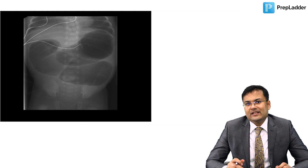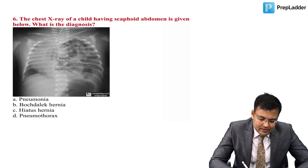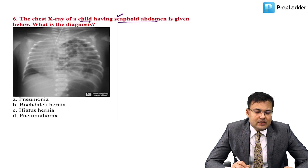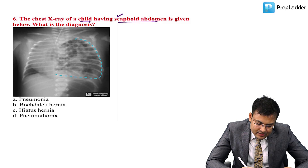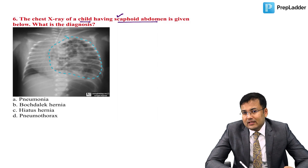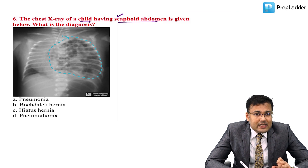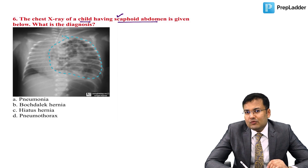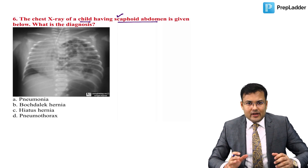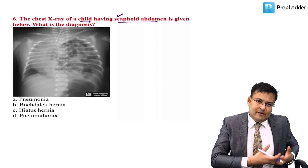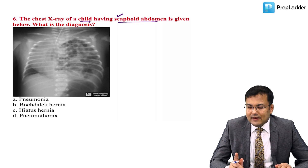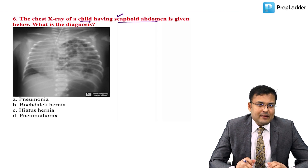Next question: chest X-ray of a child with scaphoid abdomen — in the left hemithorax, intestinal contents are visible with air-fluid levels and multiple shadows. There is mediastinal shift to the right, and very little of the right lung is aerated. Abdominal contents have entered the left hemithorax — this is congenital diaphragmatic hernia, most commonly Bochdalek hernia.